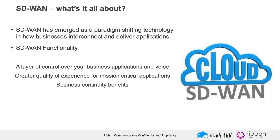From our perspective, we look at SD-WAN as giving you a layer of control over your business applications and voice — giving your end users the ability to control data flow in and out of their locations in a way that delivers a better experience for their users, employees, or business in general. It's really about making sure mission-critical applications are performing at their optimum using the broadband connections into your building, in addition to focusing on business continuity, which has been a problem solved by telecommunications for decades — the ability to keep a business running when there's a disruption or failure.